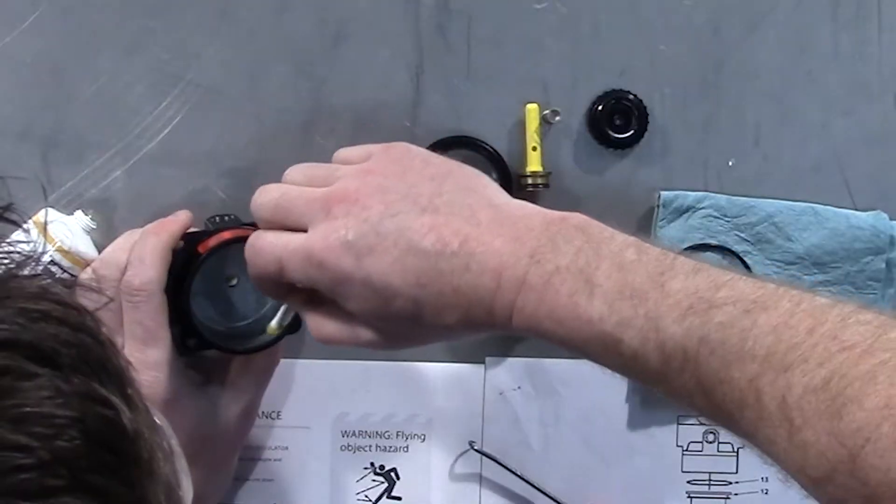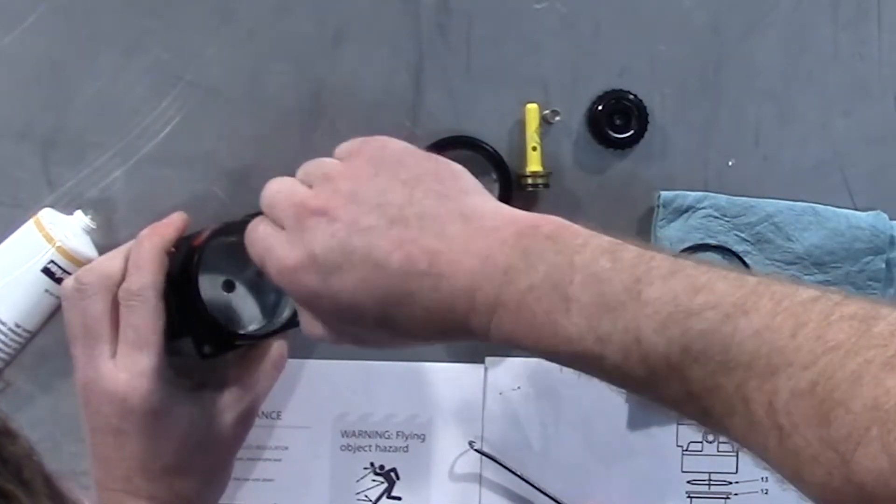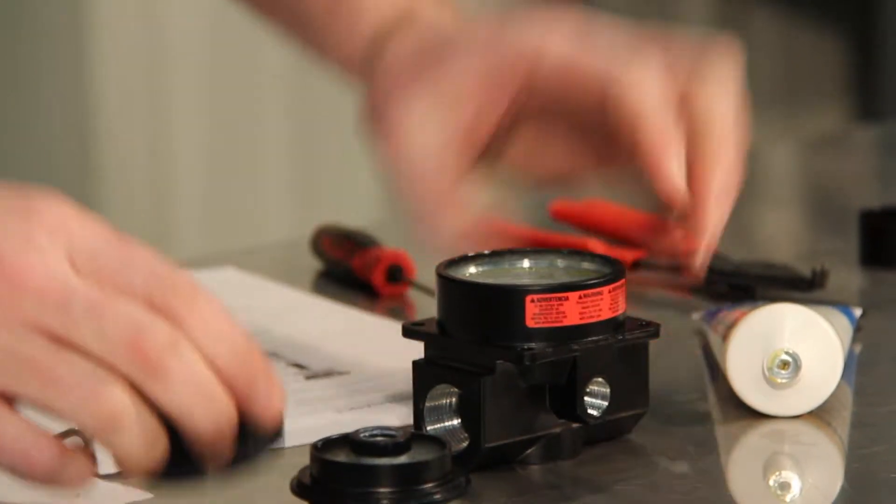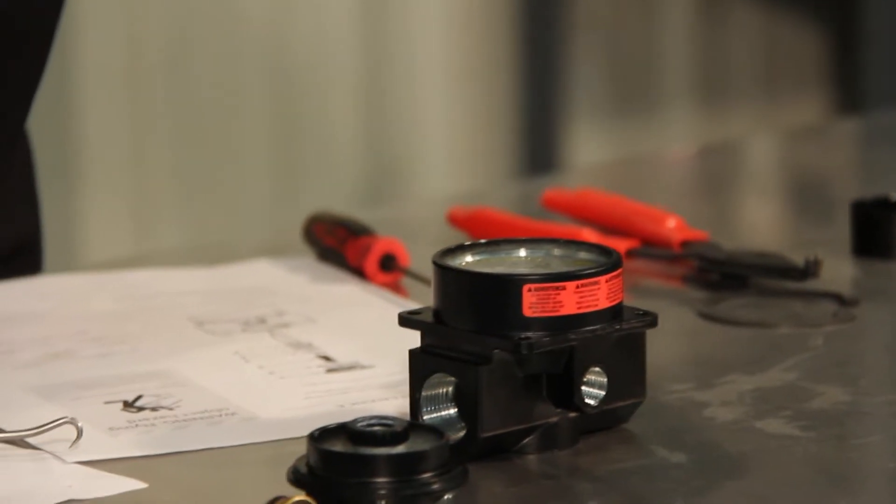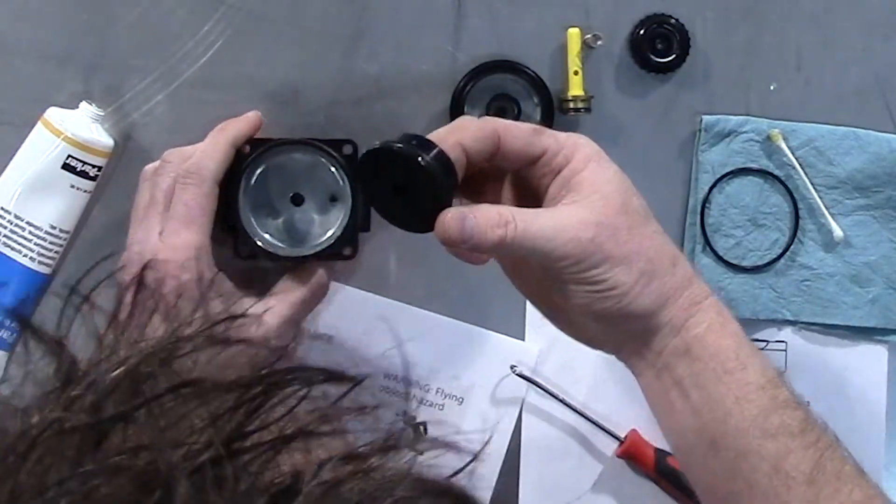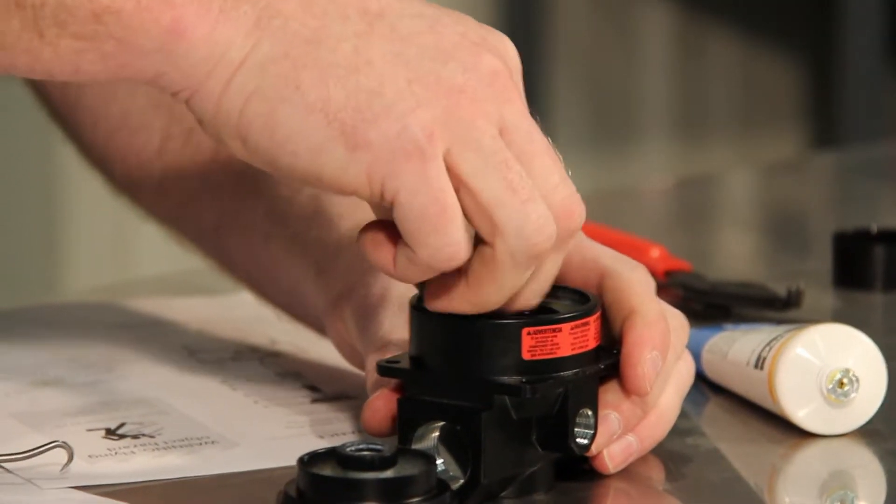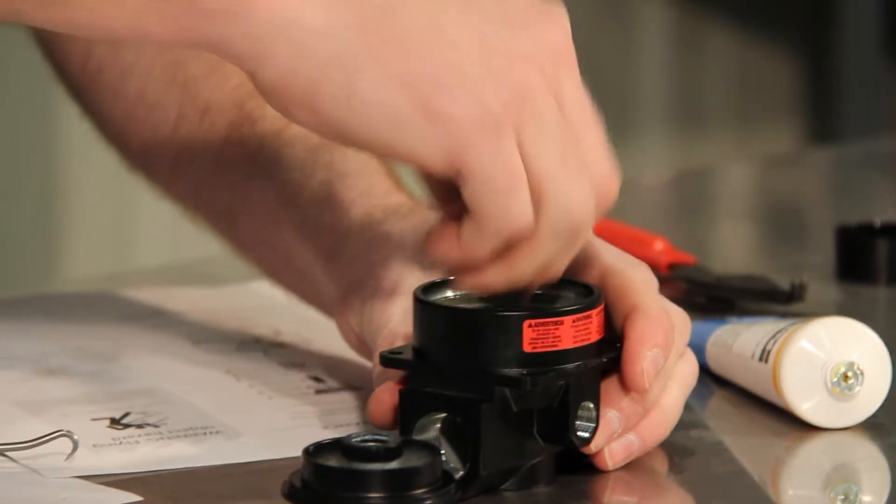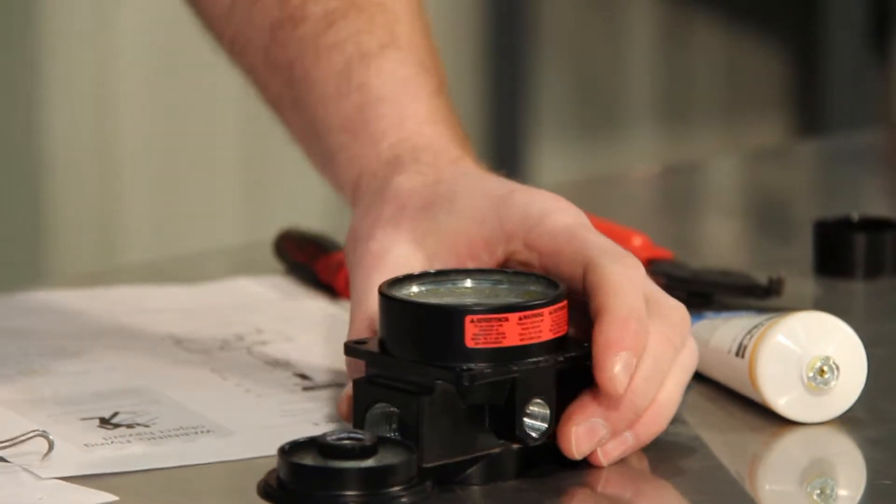We'll be using our cotton swab. Slide that down in there, making sure that the O-rings seat properly with the sides.